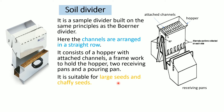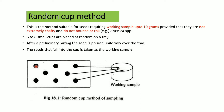The random cup method is used when the working sample is less than 10 grams and seeds are not extremely chaffy, not bouncy, and do not roll - for example, Brassica species. In this method, six to eight small cups are placed randomly on a tray, and preliminary mixed seeds are poured superficially onto the tray. The seeds collected in the six to eight cups are taken as the working sample.